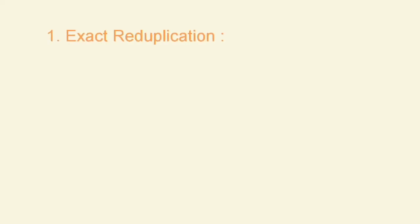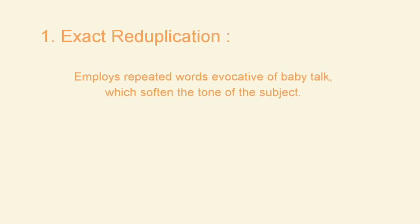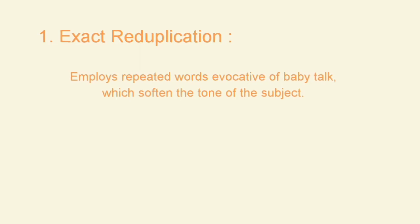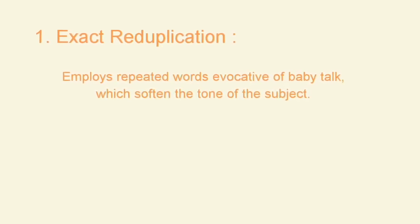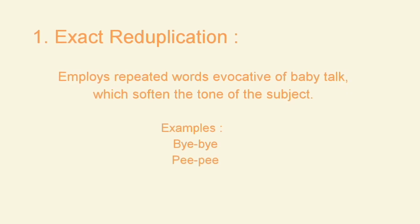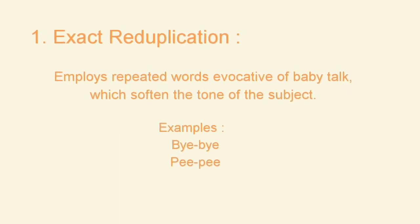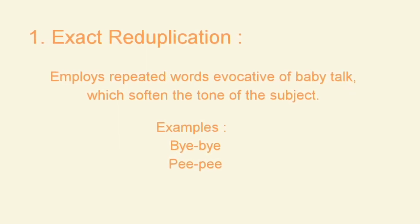The first type is exact reduplication. Exact reduplication employs repeated words evocative of baby talk, which soften the tone of the subject. For example, like bye-bye or pee-pee.